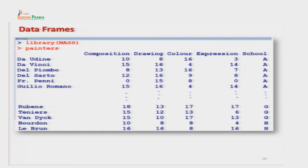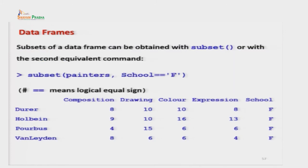इसको load करने के लिए सबसे पहले library command use करते हैं और MASS capital letters में लिखते हैं। फिर painters का data set हमारे R console में load हो जाता है। अब हम बात करते हैं कि अगर मुझको अपने इस data frame से कोई एक subset निकालना है।